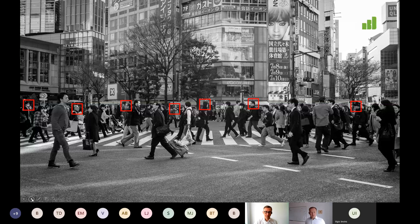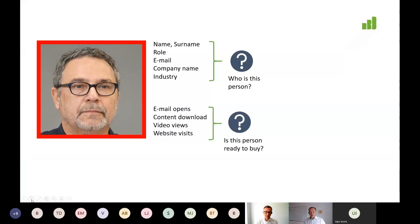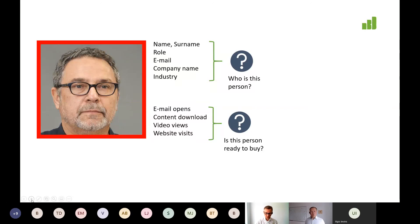This is how marketing content allows for self-selection. People who have genuine interest sign up and register themselves. As a result, you get contact data that you collect via a form when people register for the content. This usually includes things like name, surname, role, email, company name, and perhaps industry.